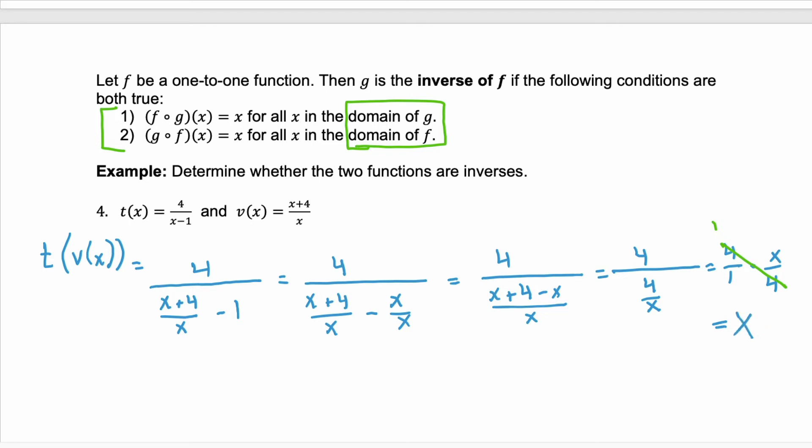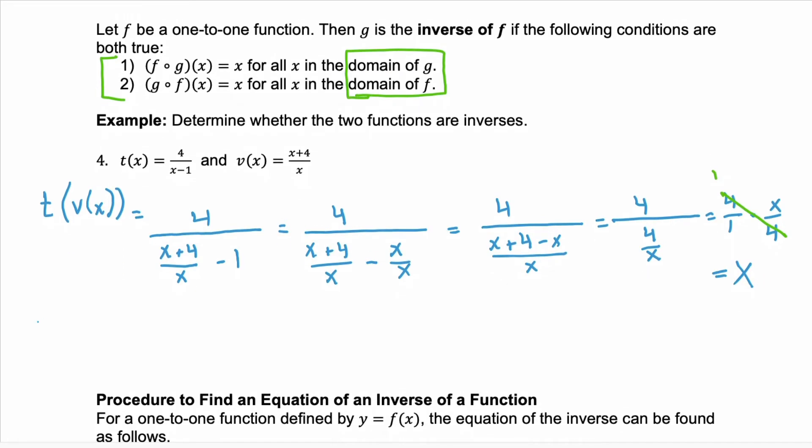So the first composition checks. Now we need to look at the composition v of t of x. So remember you're substituting your t function into your v function. So we'll have four over x minus one plus four over four over x minus one.